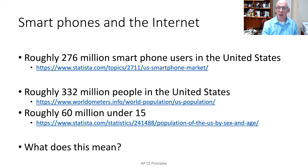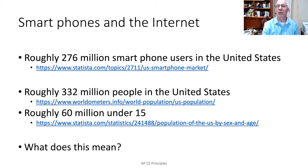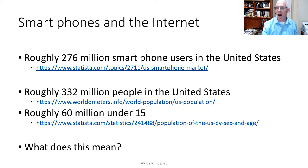Smartphones and the internet — it turns out, according to many data sources, that there are roughly 276 million smartphones in the United States. And if you look at recent census data, there are about 332 million people in the United States, and about 60 million people under 15. If you do the math on 332 minus 60, you'll get right at 276 million, which means perhaps everybody in the United States over 15 has a smartphone. The math leads us to think that most people in the United States have a smartphone.